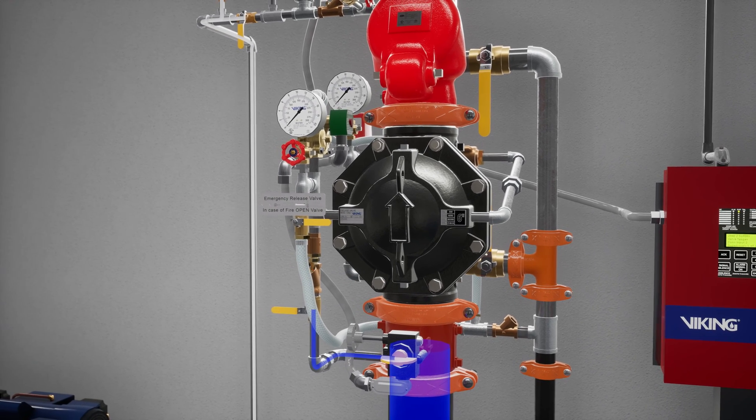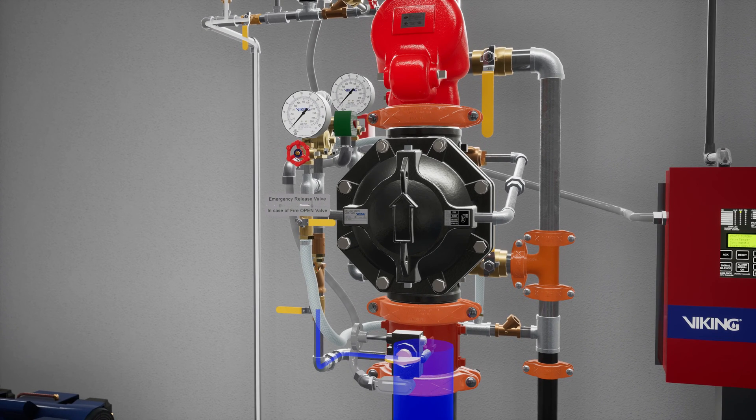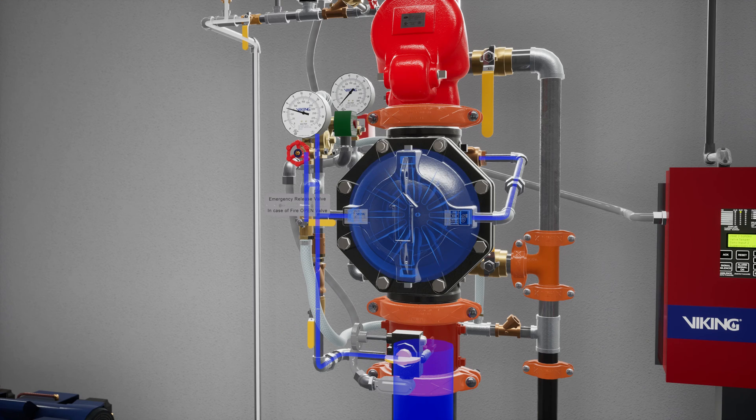Now you can start building water pressure in the pilot line. To do that, open the priming valve. Let's open the emergency release to establish flow through the priming chamber. This will remove any air trapped in the priming chamber.